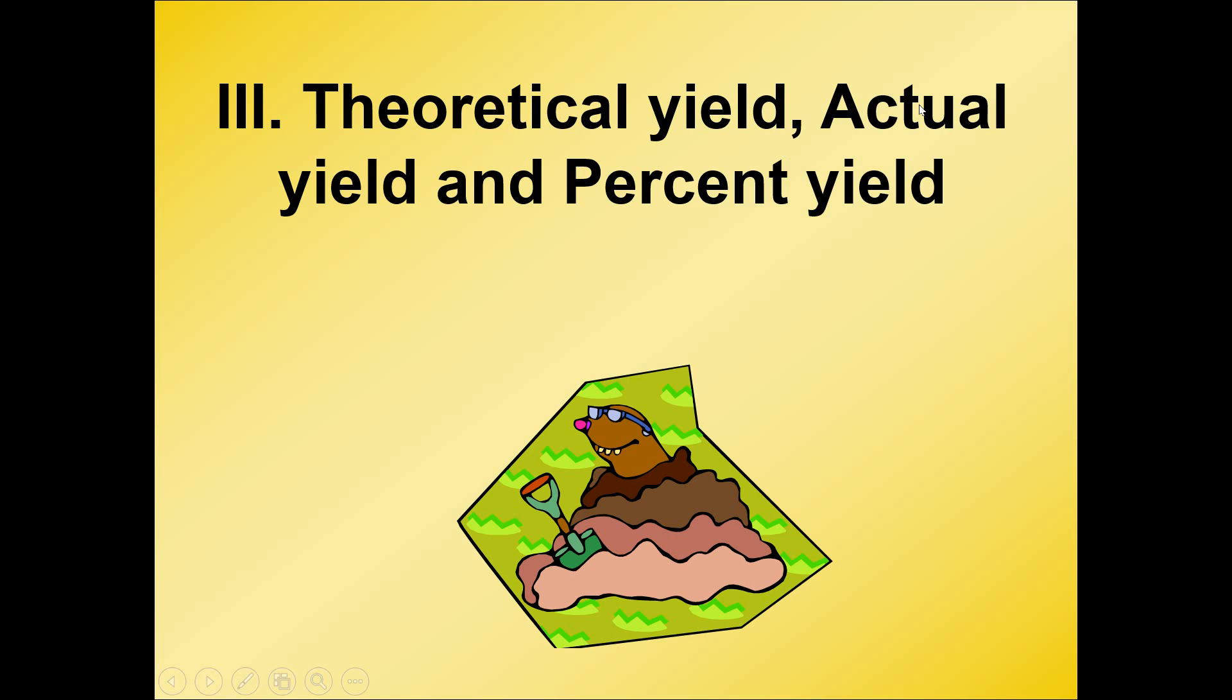An actual yield, if you want to make a little note next to this word, comes from an experiment. If you're actually in a lab setting and you have your hands on an actual product, you put it on a balance, weigh it out, find the mass, that's the actual yield, what you do in the lab.